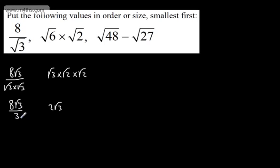So we've got 8 root 3 over 3, 2 root 3, and now I'm going to consider these. We can split these up. If we consider that this is the root of 16 times by 3, minus the root of 9 times by 3,